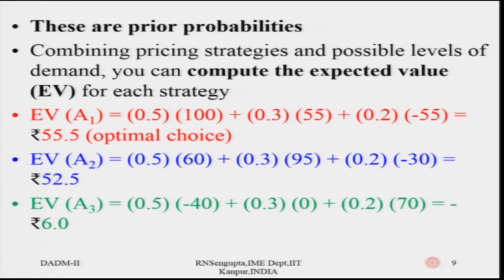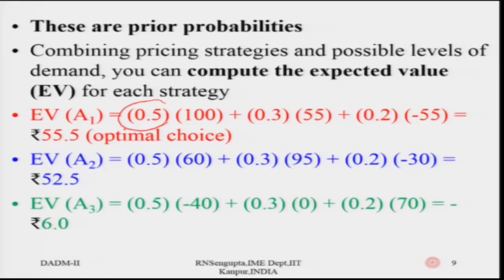These are all the prior probabilities. You do not know exactly how the futuristic market would be once you have launched the product. Based on this set of information, you calculate the expected value — the probability of the market condition, for example for low demand, times the expected payoff. Similarly, you do this for the moderate segment and the high demand segment, and you calculate the expected values. In this case, you see that a pricing policy with a low price point is the optimal solution.